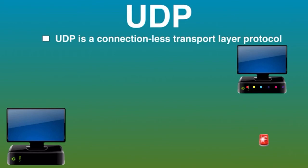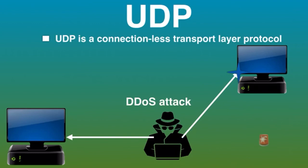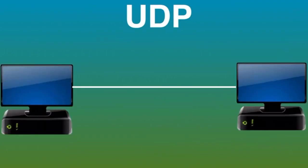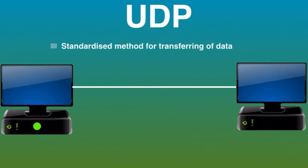However, UDP can cause packets to become lost in transit and create opportunities for exploitation in the form of DDoS attacks. This means that hackers make a website unavailable by flooding and crashing the website with too much traffic.